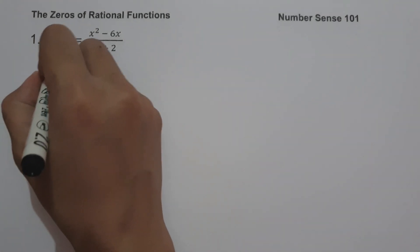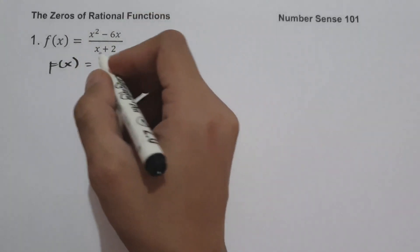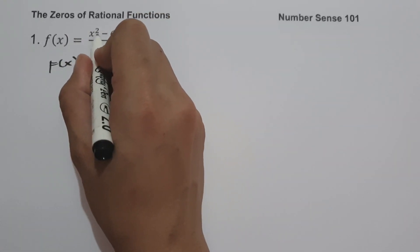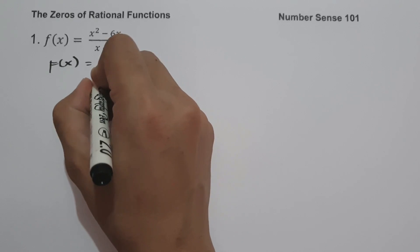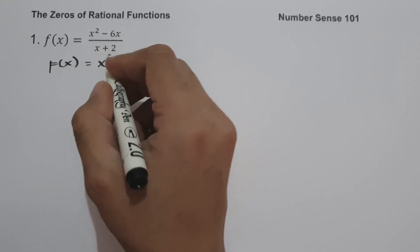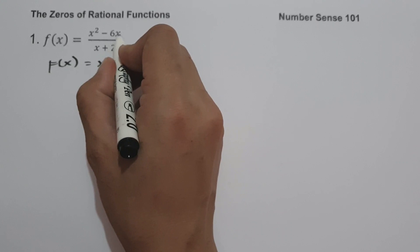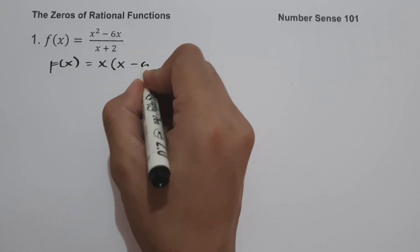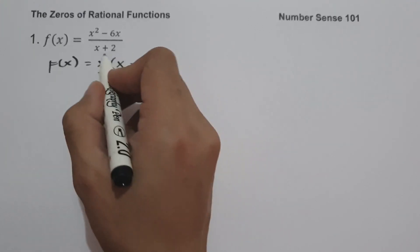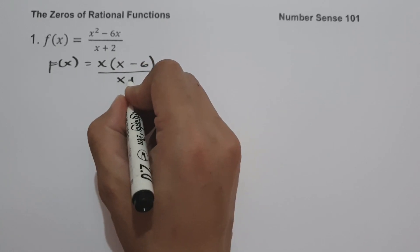Let us factor the numerator. The greatest common factor between x squared and negative 6x is x. x squared divided by x is x, and negative 6x divided by x is negative 6. Since we cannot factor the denominator further, let us rewrite x plus 2.